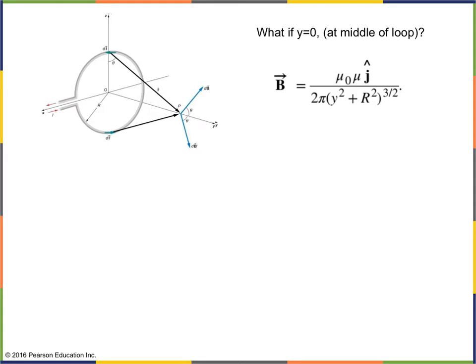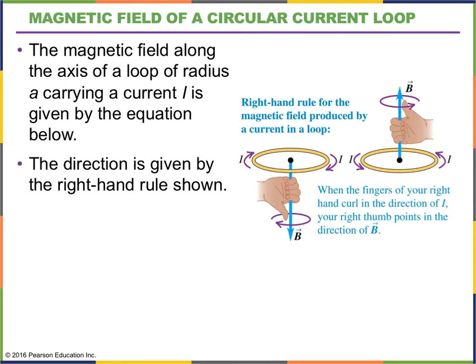We also looked at the magnetic field due to a loop of wire somewhere along the central axis of the circle — the distance y along the y-axis that passes through the center of the circle. We could also find the magnetic field at the very center. To find the direction of the magnetic field due to that wire loop, we can use the right-hand rule, where our thumb gives us the direction of the magnetic field.